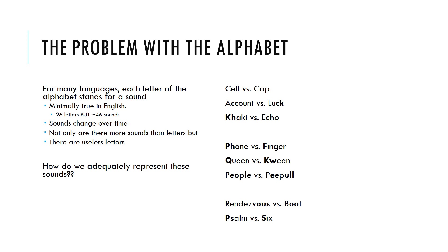This tells us we have a problem with the alphabet — if the letter 'c' has multiple productions, we need to transcribe it with a common language. For many languages, including English, a single letter can stand for multiple sounds. English has 26 letters but 46 sounds, and sounds can change over time. We also have useless letters — for instance, 'q' isn't really its own sound; it's a combination of 'k' and 'w.' Similarly, in 'rendezvous' the 's' is silent, and 'boot' uses two o's but you don't say each separately.